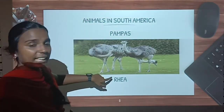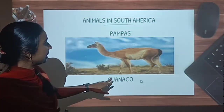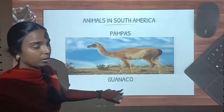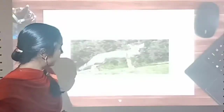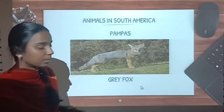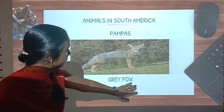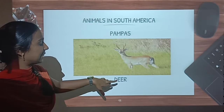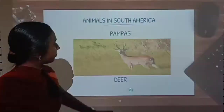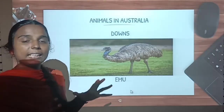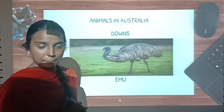In the pampas we can also see the grey fox. And then see this animal — guanaco, seen in the pampas. And next is grey fox, seen in the pampas. And then see this is the deer which we can see in pampas. Those are the animals that we can see in the grasslands of South America, that is pampas.